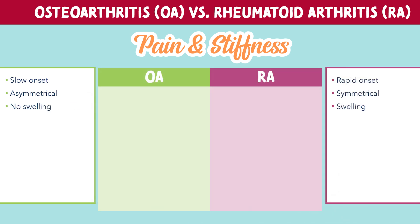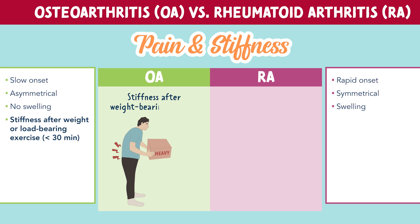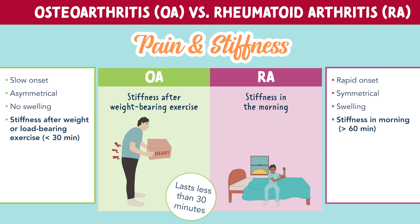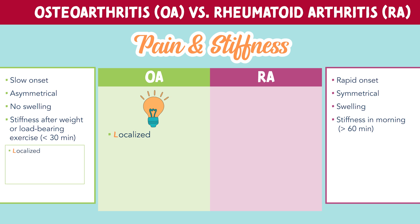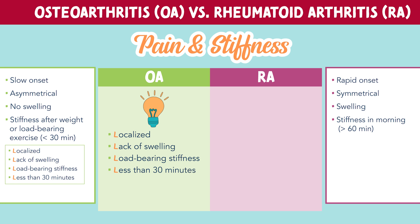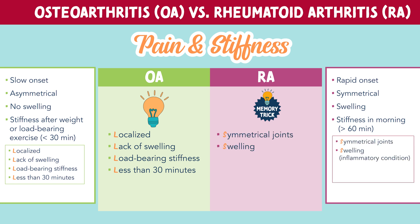In OA, patients often experience stiffness after weight-bearing exercises, lasting less than 30 minutes. Where patients with RA experience stiffness in the morning, which often lasts longer than an hour. You can remember OA with the L's of osteoarthritis: localized, lack of swelling, load-bearing stiffness, and less than 30 minutes. Where you can remember the S's of rheumatoid arthritis: symmetrical joints, swelling because it's an inflammatory condition, stiffness in the morning, and 60 minutes or more.